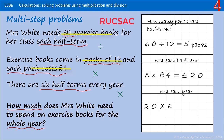20 times 6 — if you remember that 2 times 6 is 12, you should be able to work out that 20 times 6 is 120. Just check that we've done everything we need to do and that we have answered the question. Mrs. White spends 120 pounds each year on exercise books.